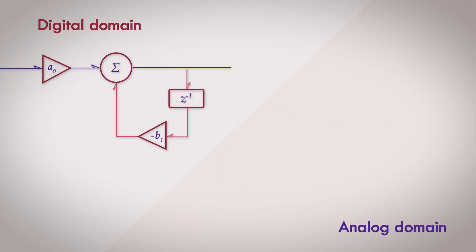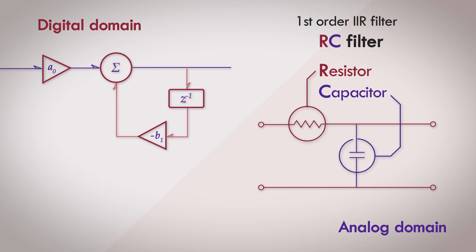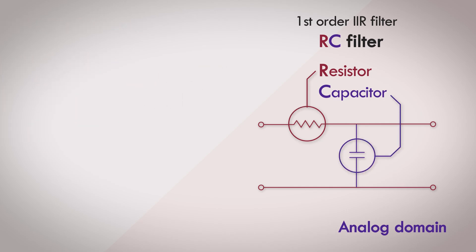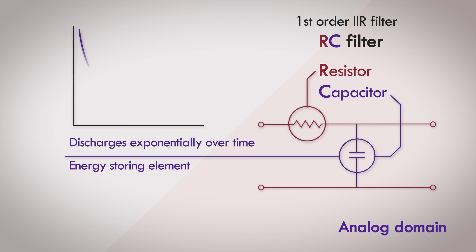The simplest analog filter is a passive RC filter, which is a first order low-pass IIR filter made up of a resistor and a capacitor. The capacitor here is an energy storing element and discharges exponentially over time. We can kind of draw parallels here between this and the use of registers for storing previous values, and a feedback path for exponential decay in the digital domain.